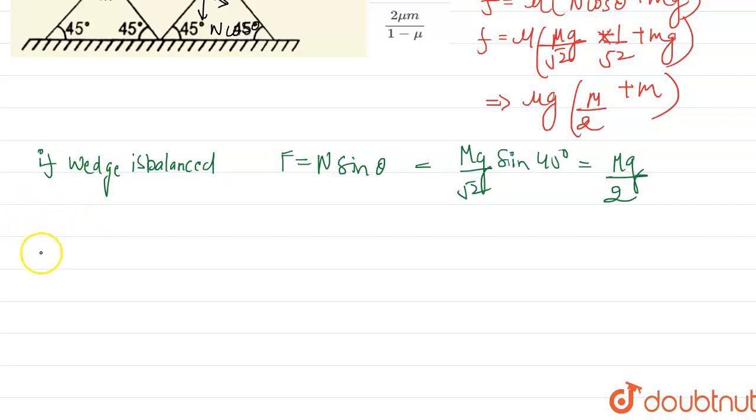Putting the value here, mu mg by 2 plus mu mg equals mg by 2.